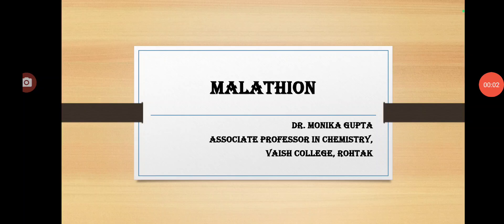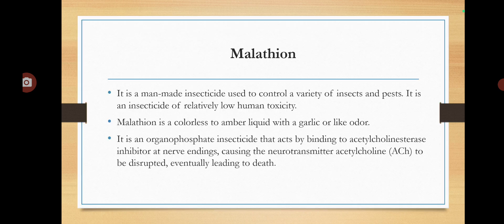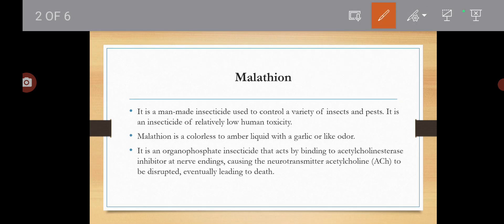Good morning students, today we will discuss another insecticide — Malathion. Malathion is an organophosphorus pesticide and it is a man-made insecticide that is used to control a variety of insects and pests. It is an insecticide of relatively low human toxicity.